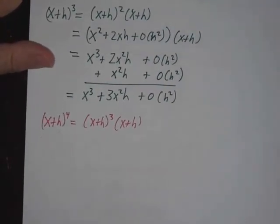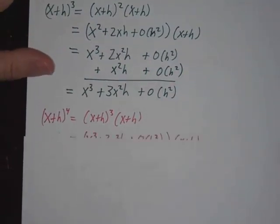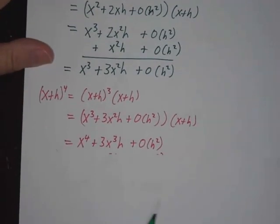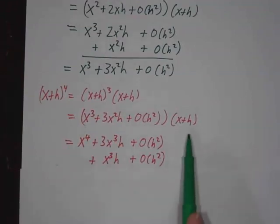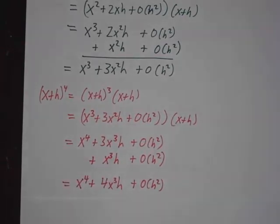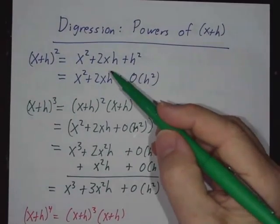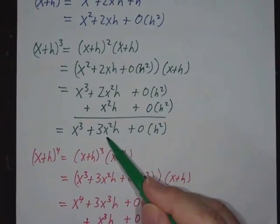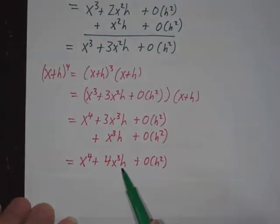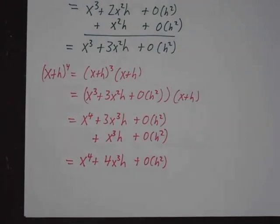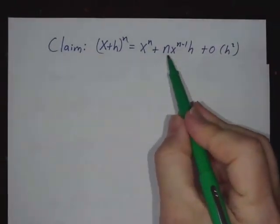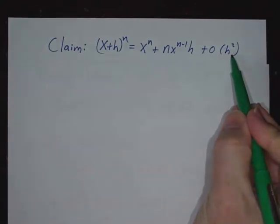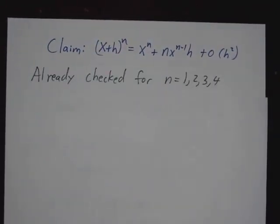Fourth power, well, you just take what we did for the third power and multiply it by x plus h. Multiply by x and you get x to the fourth plus 3x cubed h plus order h squared. And then the multiplying by h gives you another x cubed h. So now we've got x to the fourth plus 4x cubed h plus order h squared. Do you see the pattern? We had 2xh, then we had 3x squared h, then we had 4x cubed h. So I claim that in general, when you take an nth power, you're going to get nx to the n minus 1h and then all the other noise. And we've already checked this for n equals 1, 2, 3, and 4.